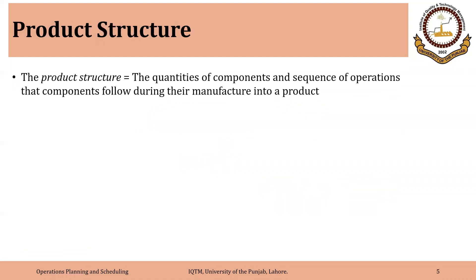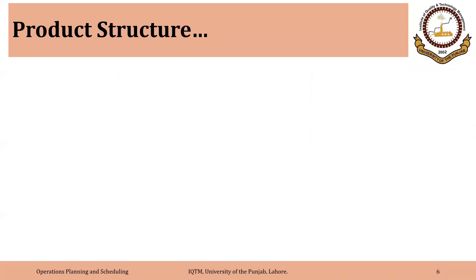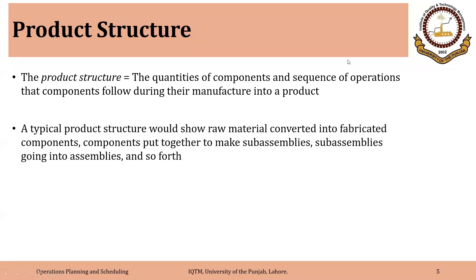First, we will define what a product structure is. Product structure is focused on the quantities of components and sequence of operations that components follow during their manufacture into a product. Essentially, there are two things that are part of a product structure: the quantities of components and the sequence of operations.